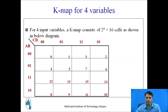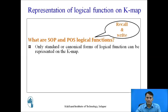For 4 input variables, a K-map consists of 2 raised to 4, equal to 16 cells. For 4 variables, 2 variables AB are taken at the row side and 2 variables CD are taken at the column side. Only standard or canonical form of logical functions can be represented on K-map.